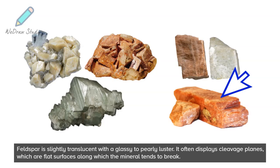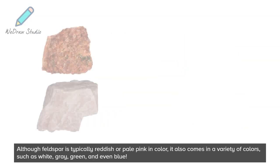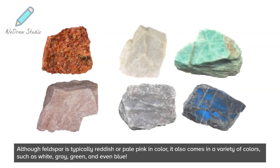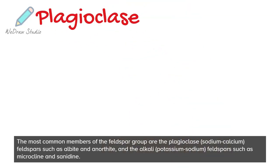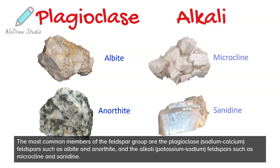Although feldspar is typically reddish or pale pink in color, it also comes in a variety of colors such as white, gray, green, and even blue. The most common members of the feldspar group are the plagioclase sodium-calcium feldspars, such as albite and anorthite, and the alkali potassium-sodium feldspars, such as microcline and sanidine.